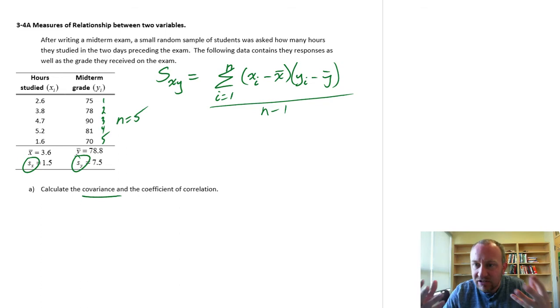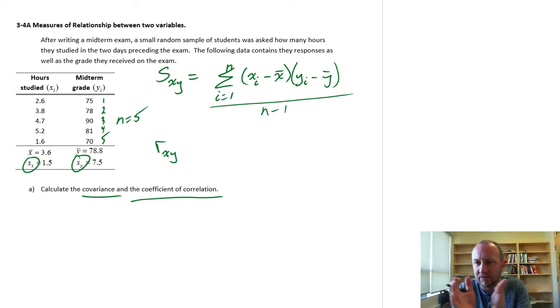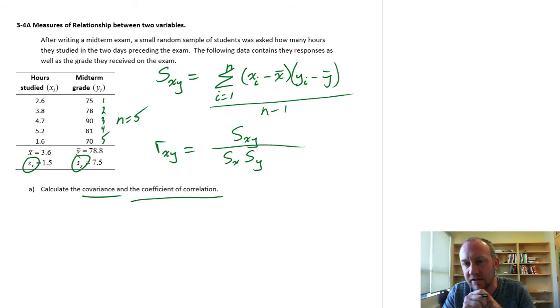So to make it easier to kind of interpret the strength of that relationship, a more commonly used measure of linear association is this coefficient of correlation. The notation there is little r, x, y. Again, x, y. It's a relationship between these two variables. And it uses the covariance in the numerator. So that's why we're going to calculate that first. Divided by the product of the two sample standard deviations. And so that's why those become useful here.